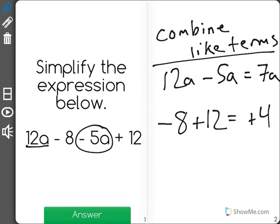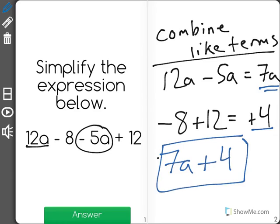So our answer then, we just take our simplified parts: 7a and a positive 4, plus 4 for our correct answer.